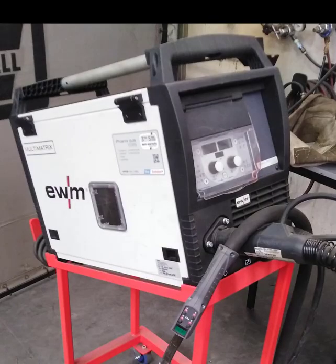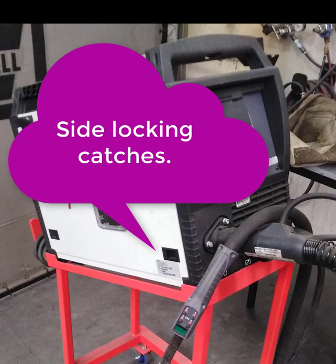So once you've worked out what wire you're using you need to open the side cabinet panel on the welder which is highlighted on the screen to be able to look at the job numbers.